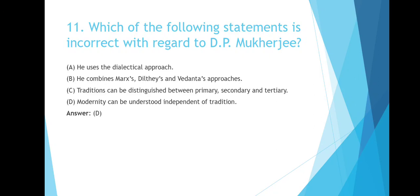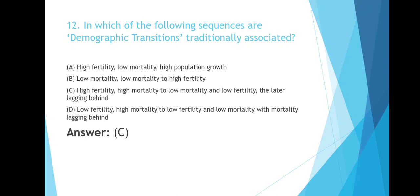In which of the following sequences are demographic transitions traditionally associated? Option A: High fertility, low mortality, high population growth. Option B: Low mortality to high fertility. Option C: High fertility, high mortality to low mortality and low fertility,